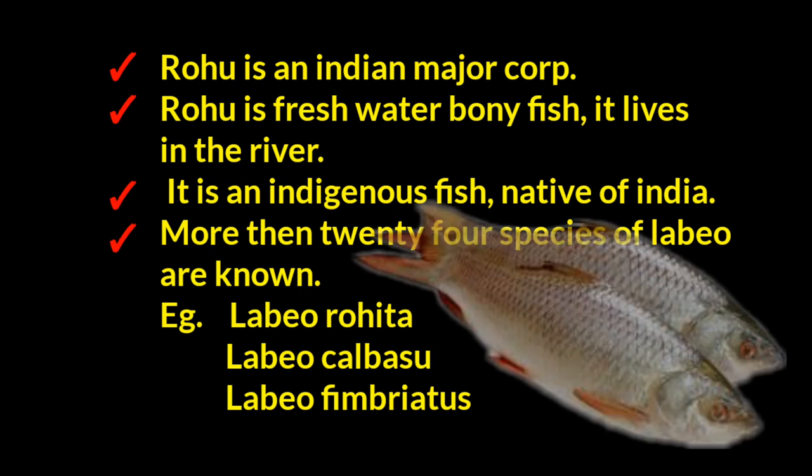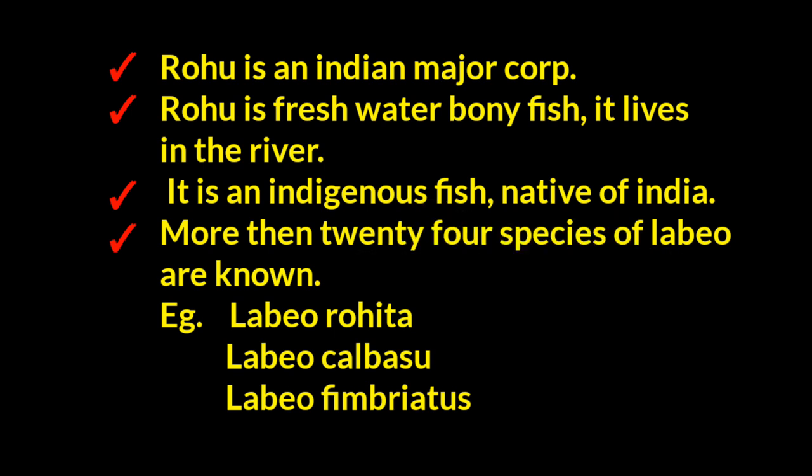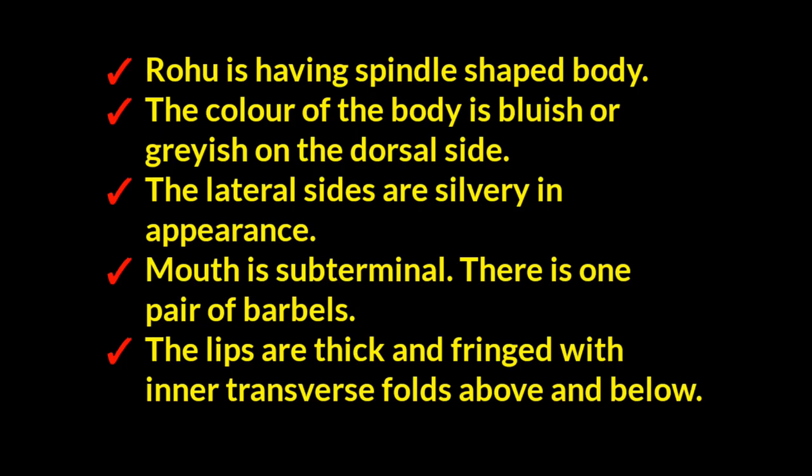Examples include Labio rohita, Labio kalabasu, and Labio fimbriatus. Rohu has a spindle-shaped body.